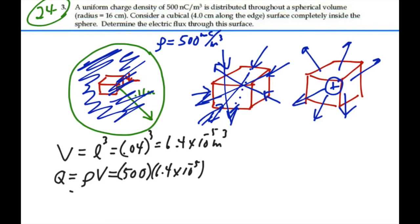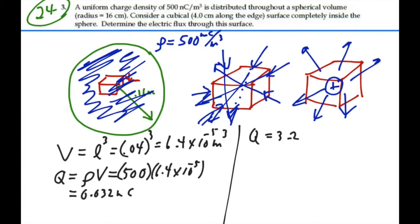That gives us the charge in nanocoulombs: 0.032 nanocoulombs, or equivalently 3.2 times 10 to the minus 11 coulombs. That is the total charge inside the cube.